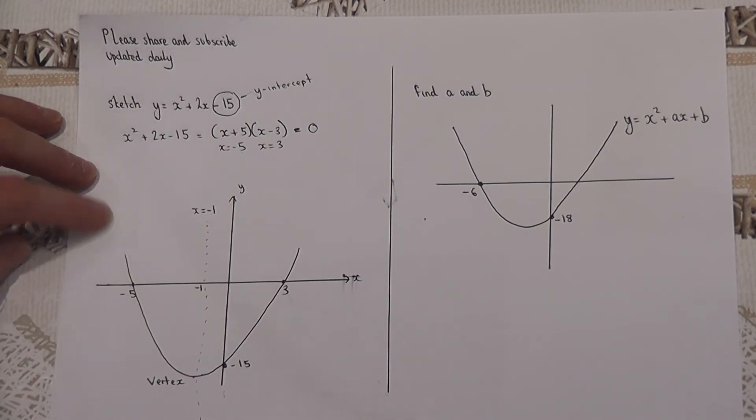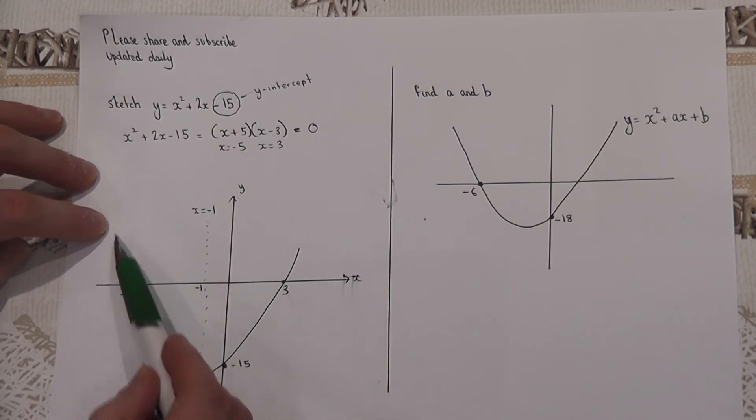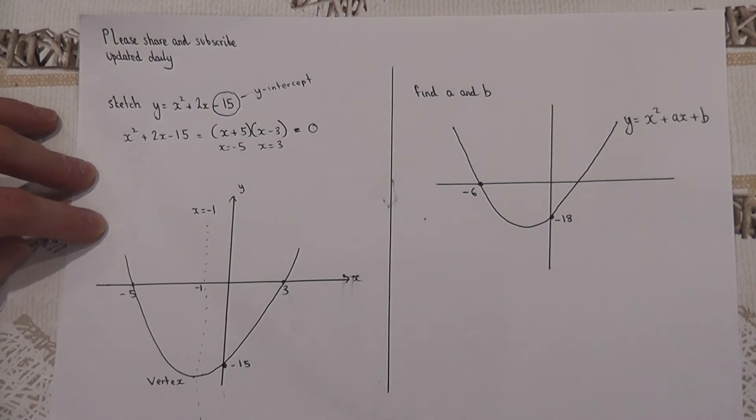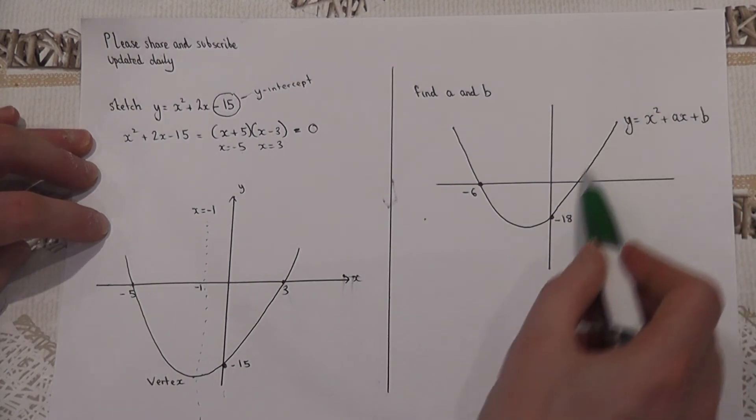Okay, so we have used the equation to find some key values called roots, marked them on, and then sketched a symmetrical graph which passed through minus 15 on the y-axis.